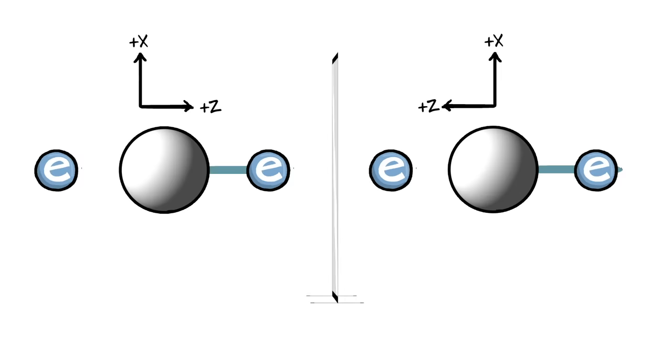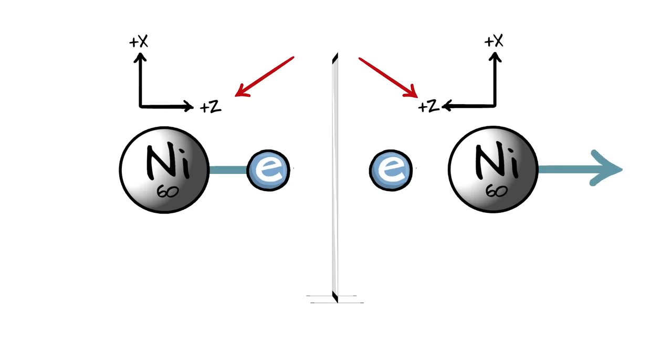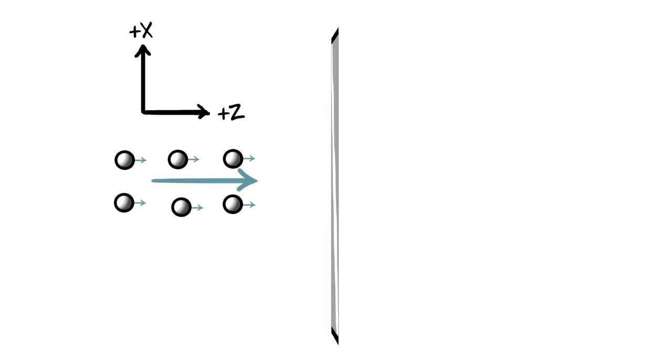However if the electrons were emitted in one direction preferentially, say in the positive z-direction, well then in the mirror experiment the electrons would also have to fly off preferentially in the mirror positive z-direction, which is opposite to the original positive z-direction.